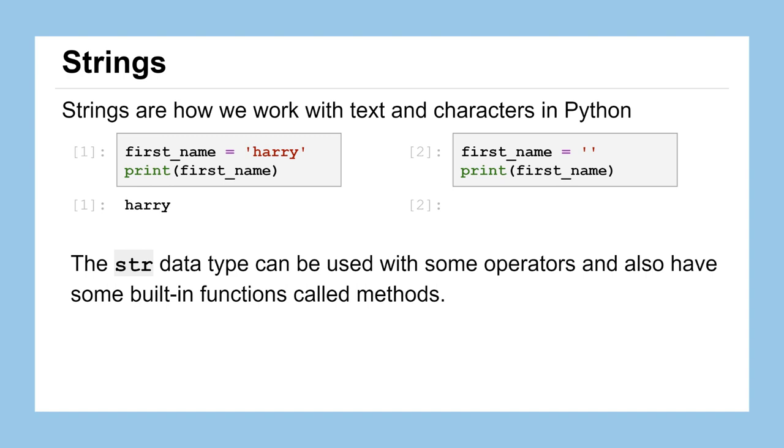Strings are how we're going to work with text and other characters such as numbers and punctuation while we're working in Python. We saw in an earlier lesson that strings are denoted using single quotes or double quotes on either side of the text, and you can assign them to variable names. Here we have the string Harry, which is lowercase h-a-r-r-y within single quotes, assigned to the variable named first_name. Then we can use the print function either on a string directly or on the variable that contains the string to print it out to the screen.